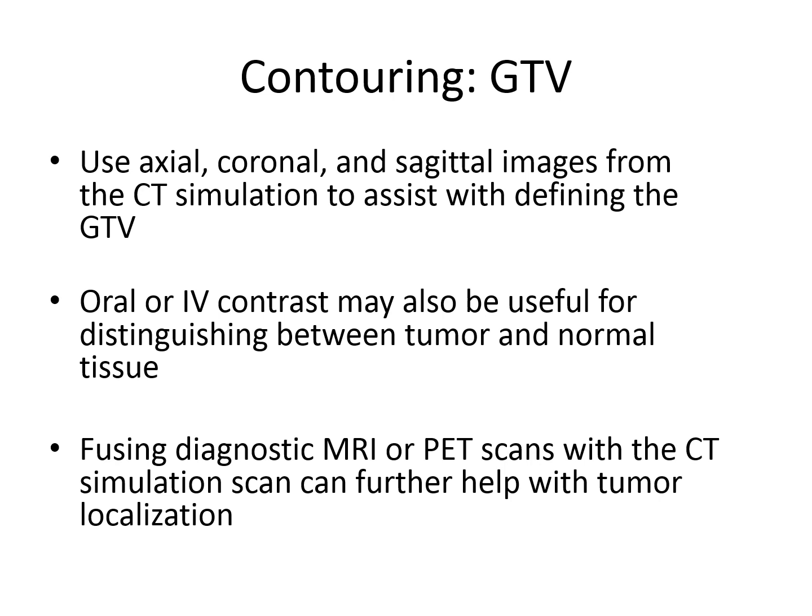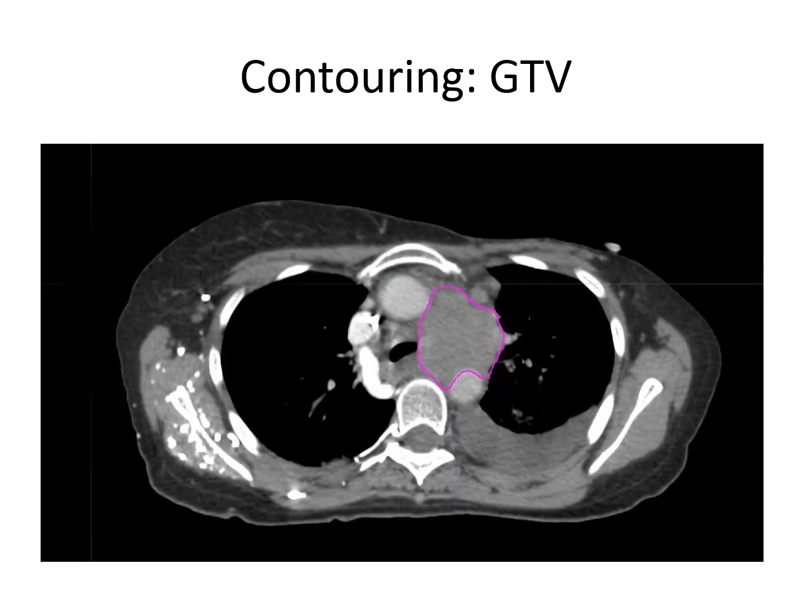When contouring the GTV, use the axial, coronal, and sagittal images from the CT simulation to assist with defining the GTV. Oral or IV contrast may be useful for distinguishing between tumor and normal tissue. Sometimes fusing diagnostic MRI or PET scans with the CAT scan simulation can also help with tumor localization. I have outlined the gross tumor volume evident on this particular slice, and you can see that the gross tumor abuts the airway as well as the vasculature.